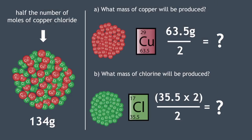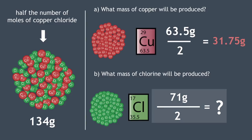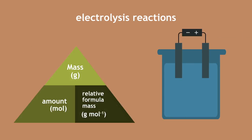The answer is that because half of the mass of copper chloride was used, then half the mass of the copper is produced, that's 31.75 grams. Also, half the mass of chlorine gas is produced, so that's 35.5 grams or 12 decimetre cubed. There is a second way of calculating the mass produced from electrolysis reactions.